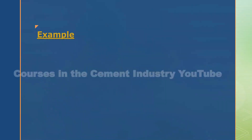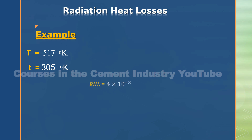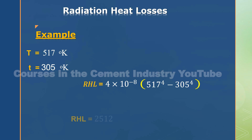Example for radiation heat losses: where T equals 517 degrees Kelvin, T equals 305 degrees Kelvin. RHL equals radiation heat losses equals 2512 kilocalories per hour per square meter.